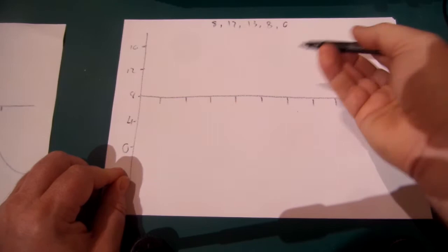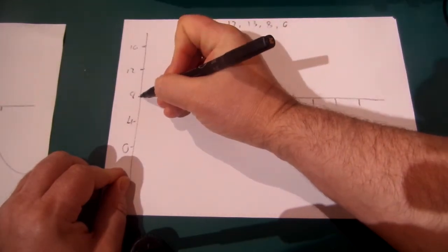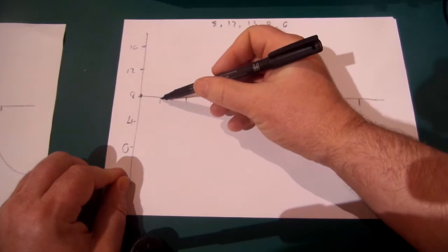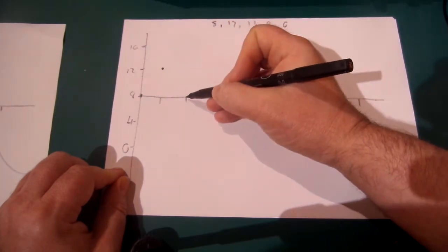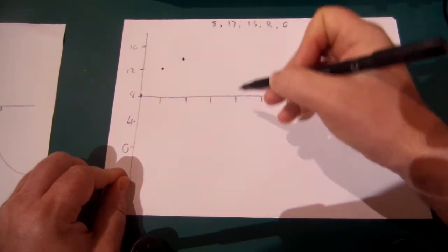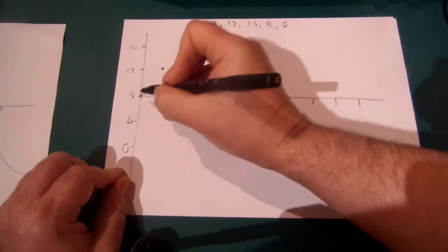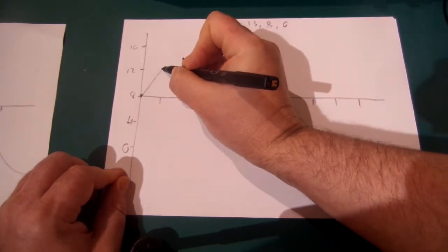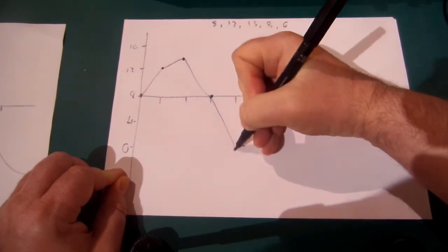And we'll re-plot them. So, time interval 0, it was an 8. So that's my first point. The next time interval it was 12. So that's my next plot point. And the next it was 13, about there. And the next one was 8. And the next one was about 0. And we'll just join them up with straight lines.